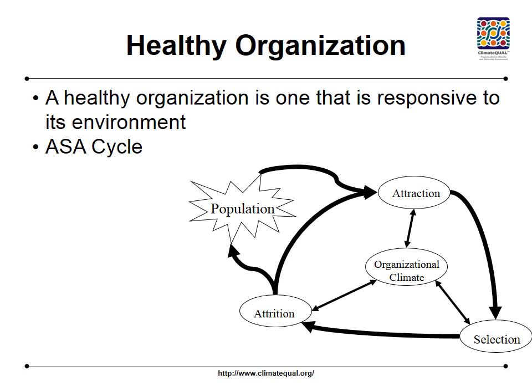If the organization reduces diversity too much, we've found it no longer pays attention to its environment. It starts to listen only to internal voices about how the library should perform and disconnects from what faculty or students — its customer base — are saying. It's this disconnection that we find is when organizations move into the death spiral. The key with ClimateQual is to measure particular climates which slow down the ASA cycle.